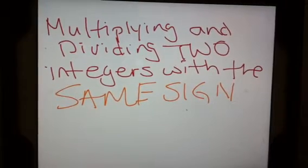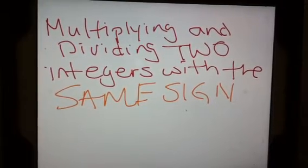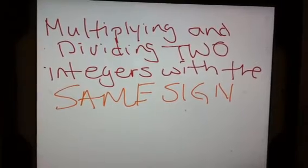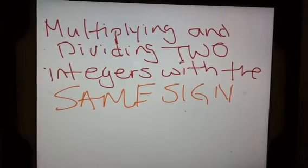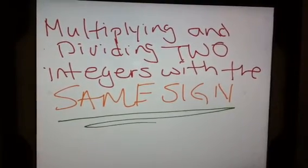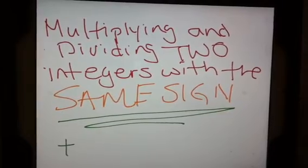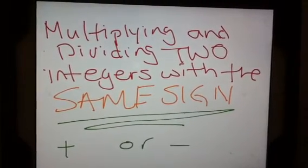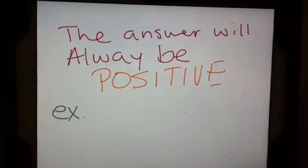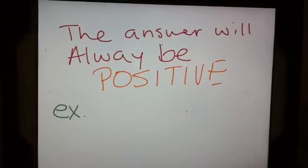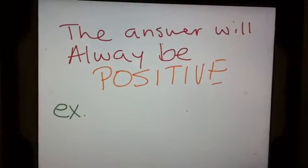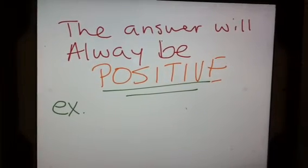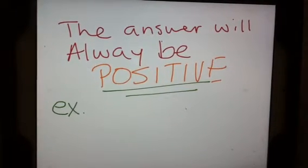Now, multiplying and dividing integers. When you're multiplying or dividing two integers with the same sign — meaning they are both positive or both negative — the answer will always be positive. If the signs are the same, the answer is always positive.